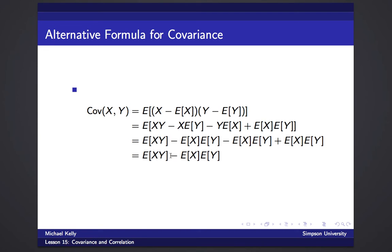So that's an alternate formula. We have two formulas for the covariance: one is the definition, and the other is E[XY] minus E[X]E[Y], which is often easier to compute with. It's just an algebraic derivation.